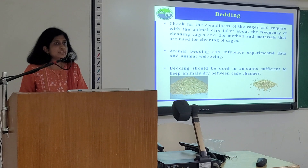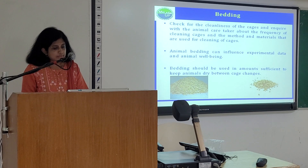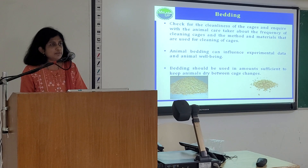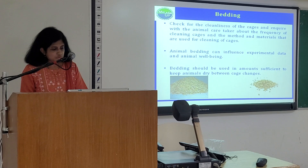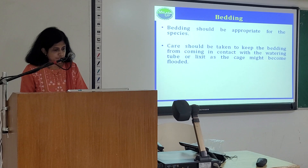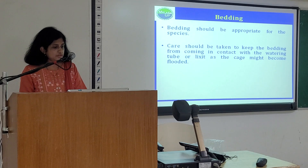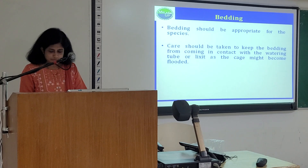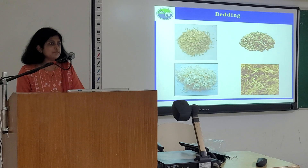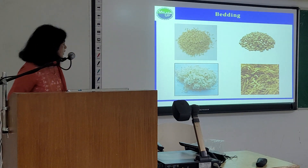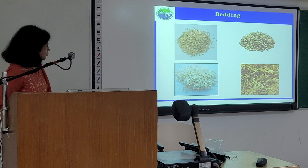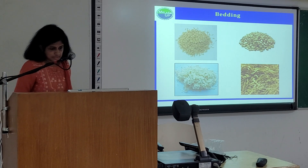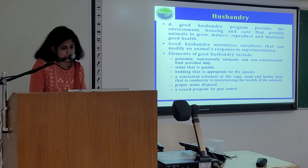Bedding is the next consideration. One should check for the cleanliness of the cages and enquire with the animal caretaker about the frequency of cleaning cages, and the methods and materials used for cleaning. Animal bedding can influence experimental data and animal well-being. Bedding should be used in amounts sufficient to keep animals dry between cage changes, and should be appropriate for the species. Care should be taken to keep bedding from coming in contact with the watering tube, as the cage might become flooded. Different types of bedding materials include paddy husk, corn cob, wood shavings, and paper cuttings or paper shreds.